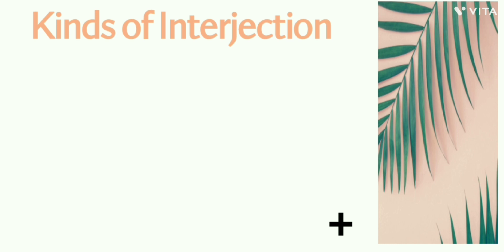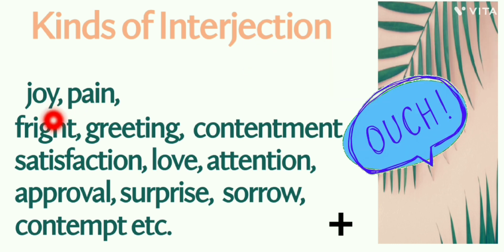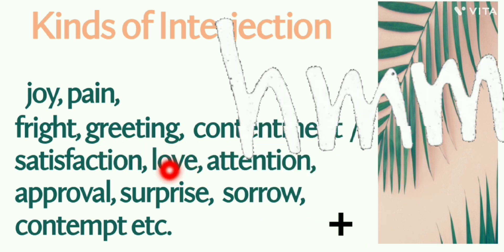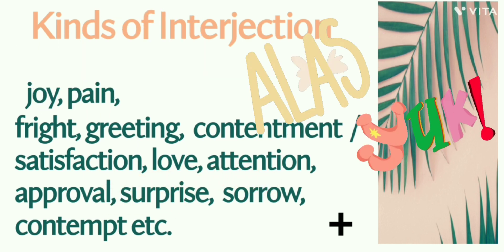Kinds of interjections: interjections cannot be divided into four, five, six, or ten kinds. Kinds of interjections are as many as the human emotions or feelings. It depends on the moods, emotions, and feelings of human beings. Roughly we can say that interjection of joy, interjection of pain, interjection of fright, interjection of greeting, contentment or satisfaction, love, attention, approval, surprise, sorrow, contempt, etc.